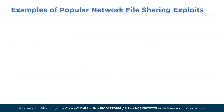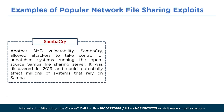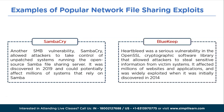SambaCry was another SMB vulnerability that allowed attackers to take control of unpatched systems by exploiting the open-source Samba file sharing software. It was discovered in 2017 and could potentially affect millions of systems relying on Samba. Heartbleed was a serious vulnerability in the OpenSSL cryptographic software library that allowed attackers to steal sensitive information from victim systems. It affected millions of websites and applications and was widely exploited when discovered in 2014.